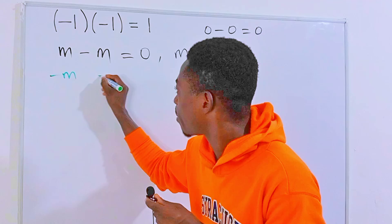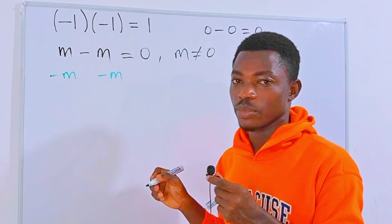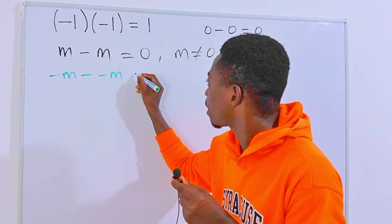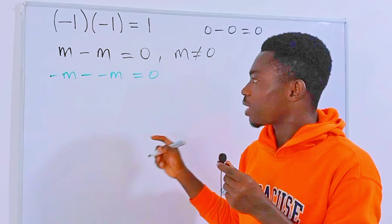...minus m. If we subtract one from the other, the result will always be zero. And to make this look nice mathematically, let's put this in parenthesis just like this.